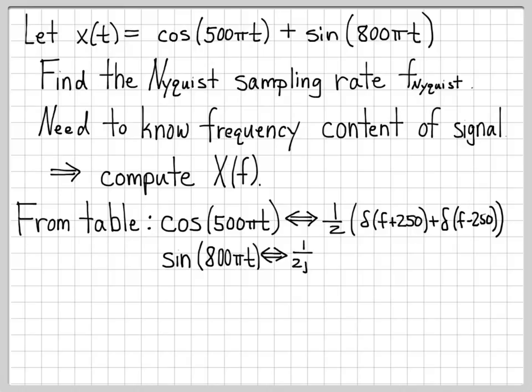And similarly, the sine term, you can look that up in a table. It's 1 over 2j times the quantity of two impulses. It's a difference of impulses here instead of a sum of impulses. But one of those impulses is at 400 hertz and one is at minus 400 hertz. So we now know what the Fourier transform is. It's just the sum of these four different impulses.